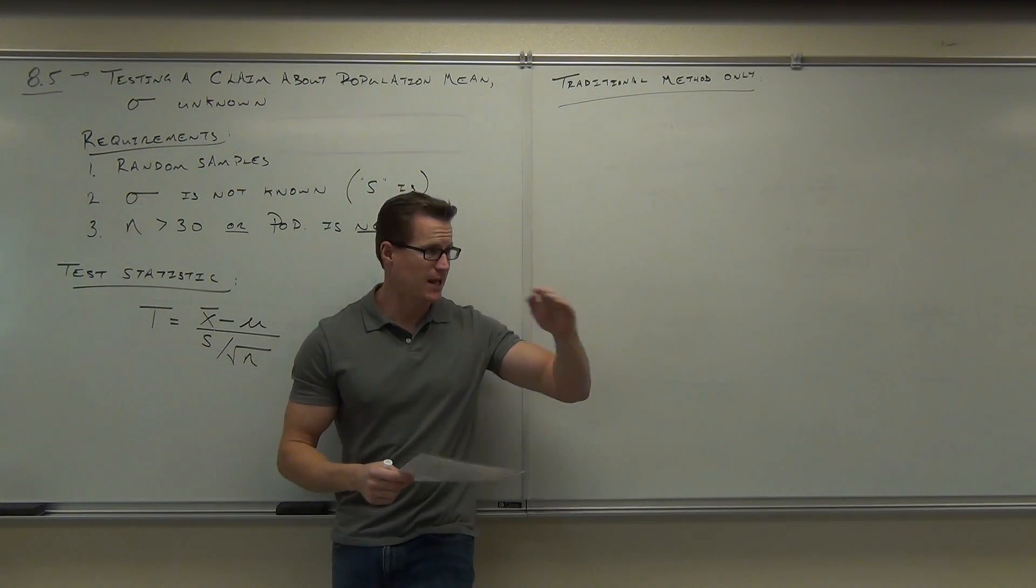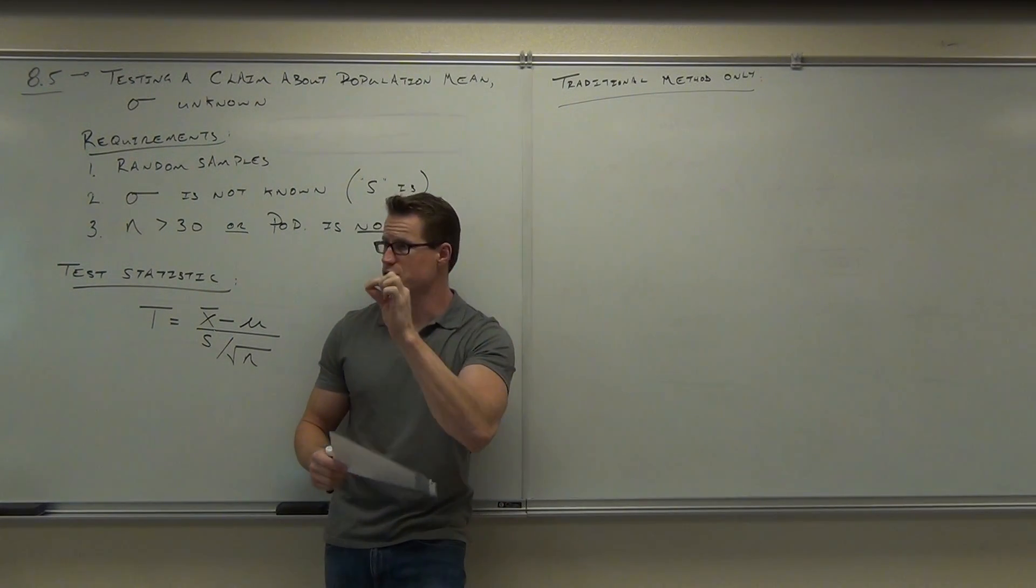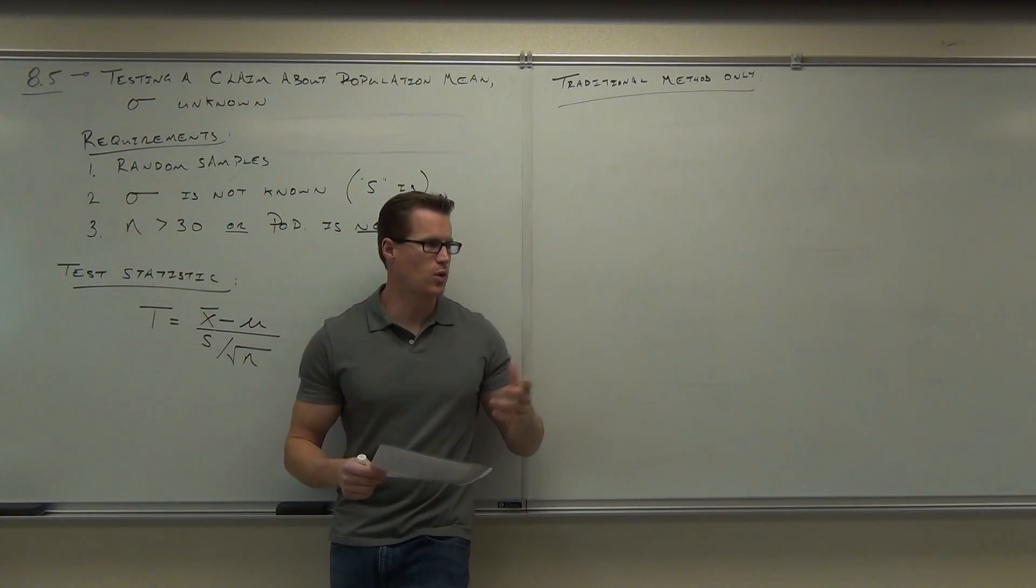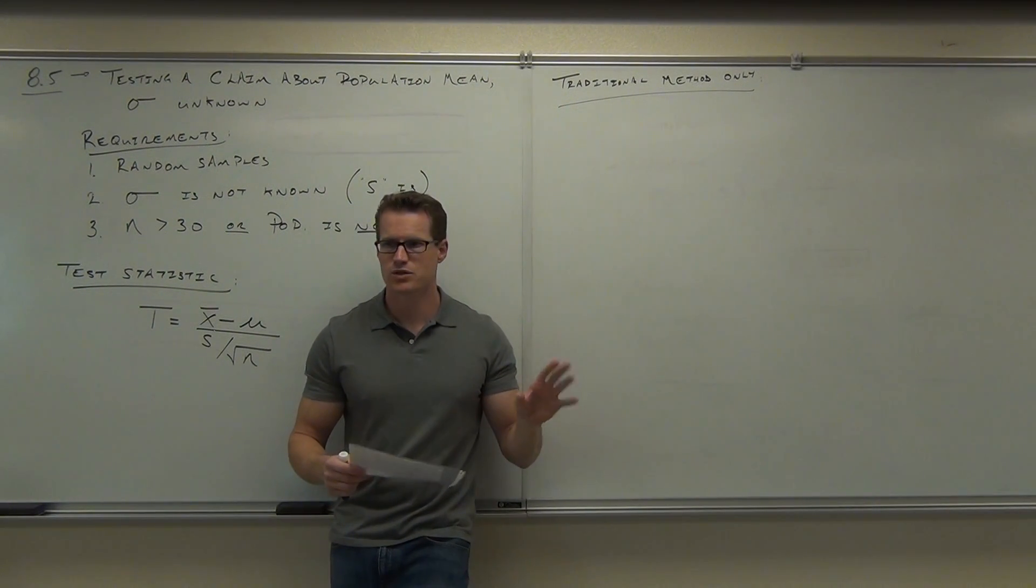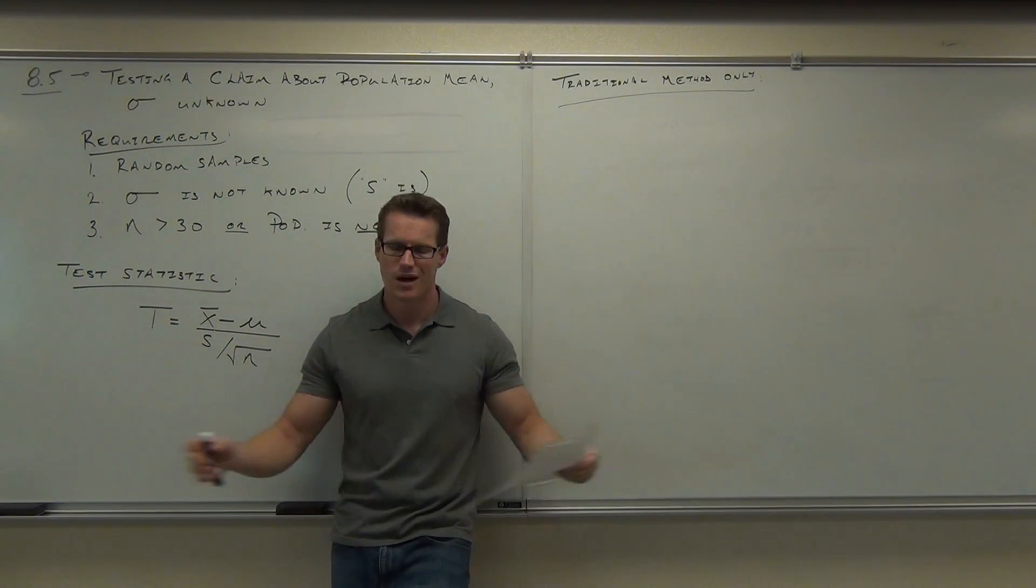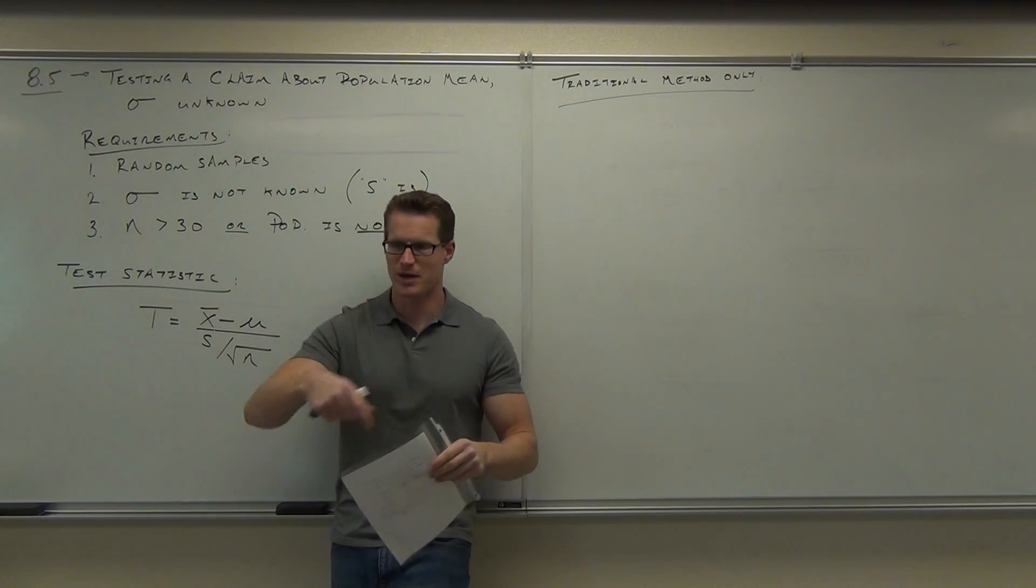Now, are you going to be exactly at 12 ounces every time you make a soda? No. You're going to be a little less, a little more. But you want to be really, really close to 12, right? So, let's say that you're on the line and you're in charge of quality control. And so, these quality control people, they typically will take a sample. They're not going to check every soda. You can't do that. But they'll pull off a couple hundred sodas,